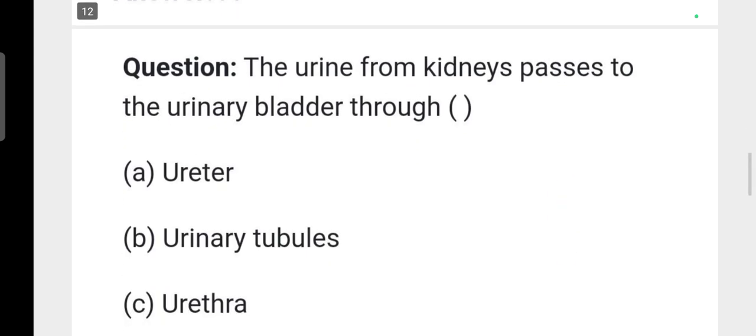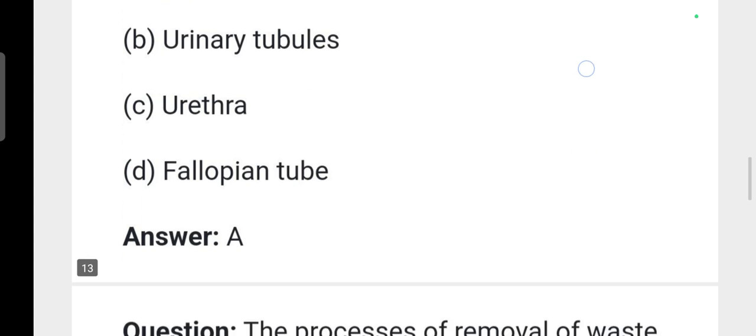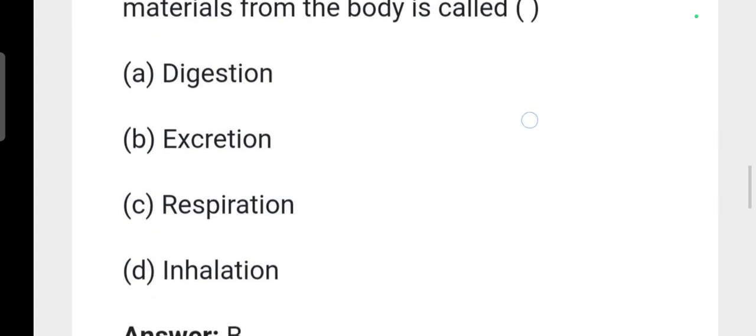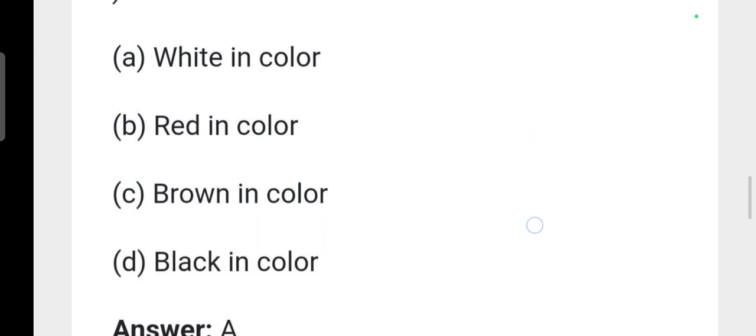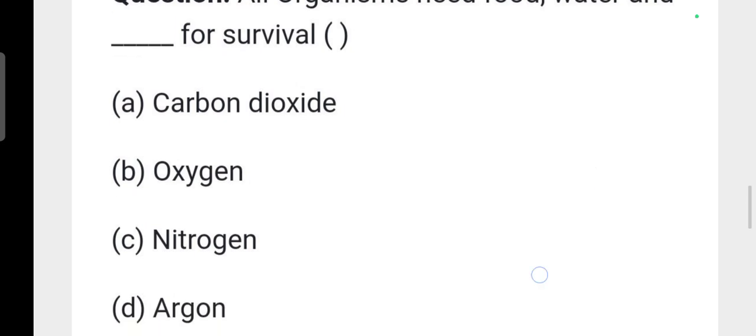The urine from kidneys passes to the urinary bladder through ureter, option A is correct. The process of removal of waste materials from the body is called excretion, B is correct. Next, the uric acid excreted by lizards is white in color, option A. Next, all organisms need food, water and oxygen, option B oxygen is correct.